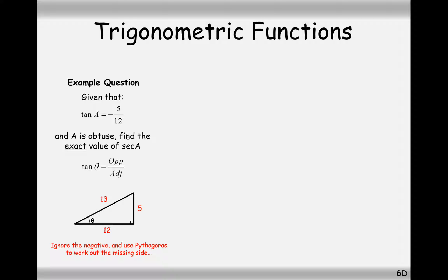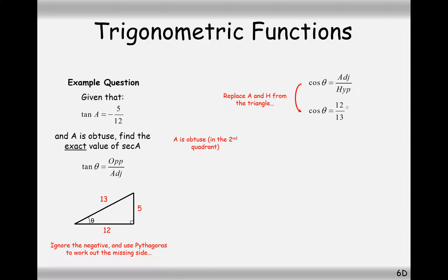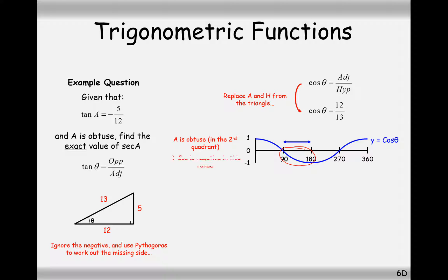We're looking to find sec A, so the best place to start is to work out cos A first. Cos theta equals adjacent over hypotenuse, so looking at our triangle we've got 12 over 13. Now we check whether it's negative or positive. The cos graph when the angle is obtuse is in the negative part of the graph, so cos theta equals minus 12 over 13. Therefore sec theta equals minus 13 over 12. That's our final answer.